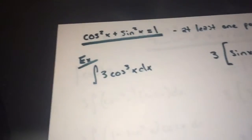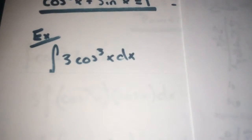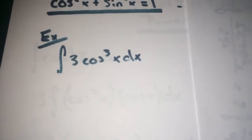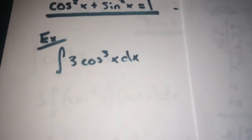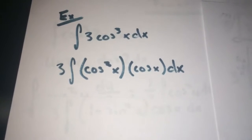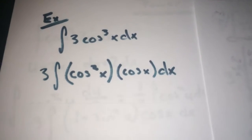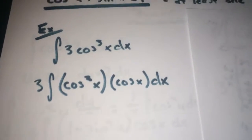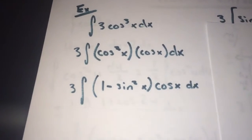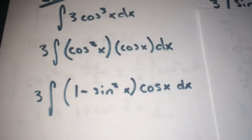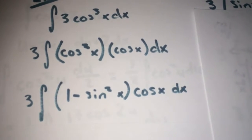The first example is the integral of 3 cosine cubed x dx. Since cosine cubed is odd, we're going to separate it out and pull out the 3. That gives us 3 times the integral of cosine squared x times cosine x dx. From there, substitute with your identity, turning cosine squared x into 1 minus sine squared x times cosine x.